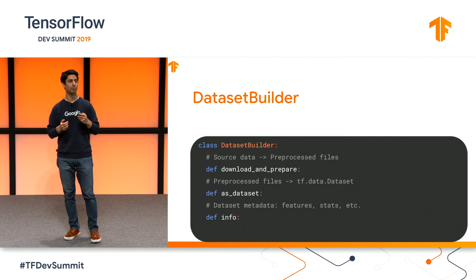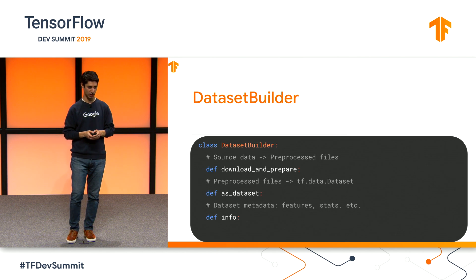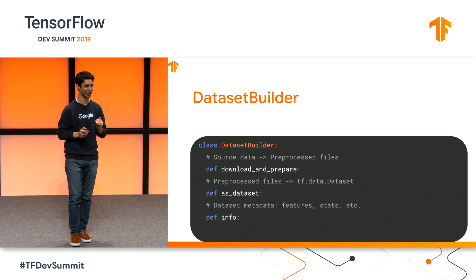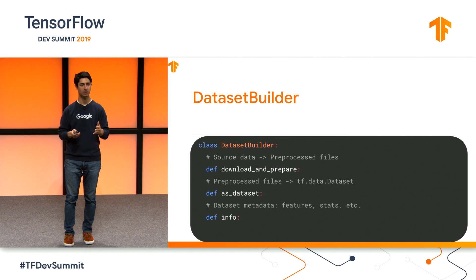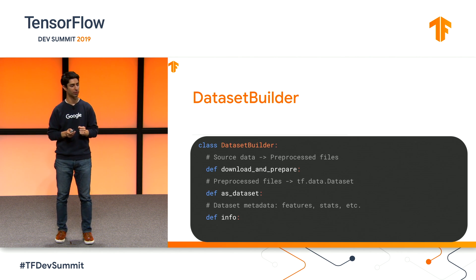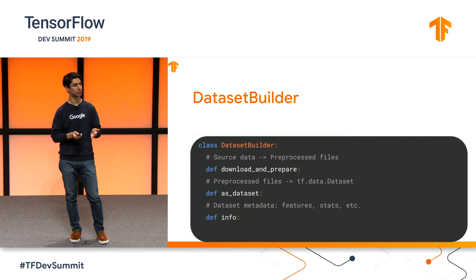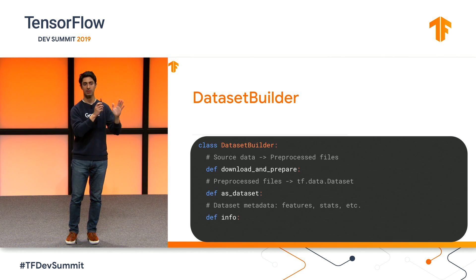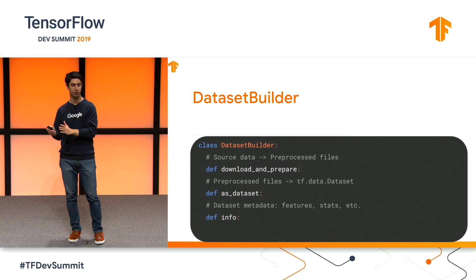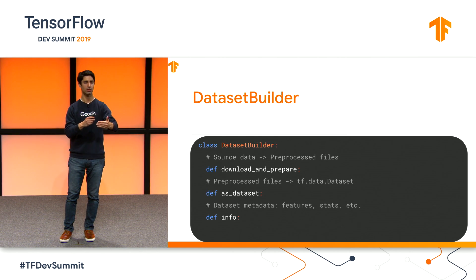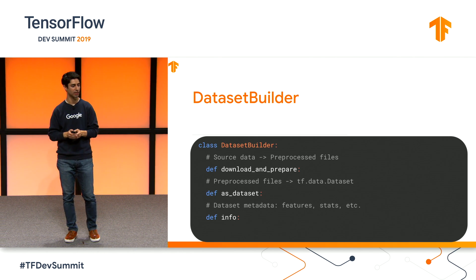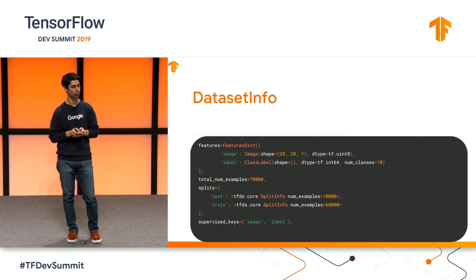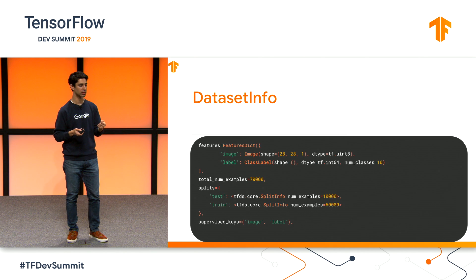Each of these datasets is packaged together as a DatasetBuilder. If you wanted to add a dataset to TensorFlow Datasets — which I hope every single one of you does — DatasetBuilder is actually really simple. It does exactly the three things that load was hiding. The first is a method called download_and_prepare, which takes source data from the open web or a local directory and produces preprocessed files — it takes data at rest and puts it into a format that's ready to move. The second is as_dataset, which takes those preprocessed files on disk and produces a tf.data.Dataset.